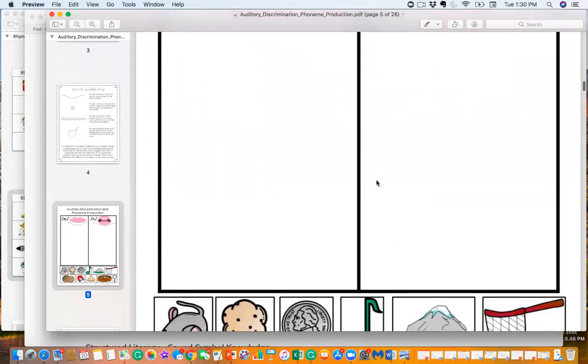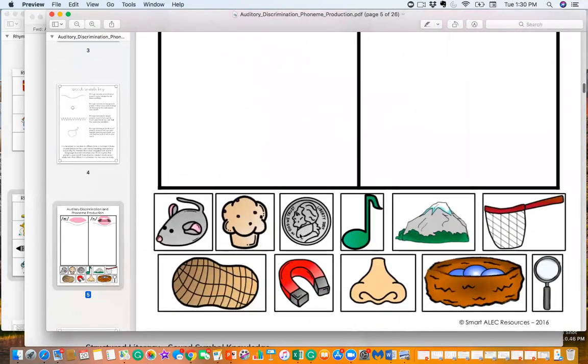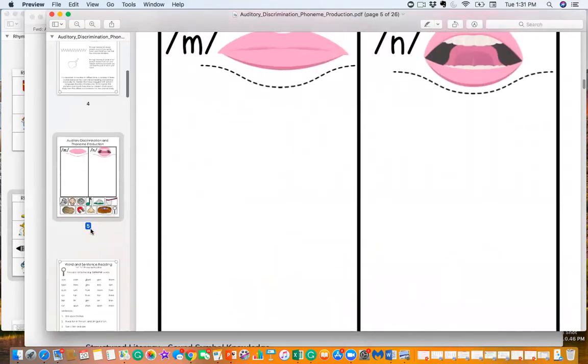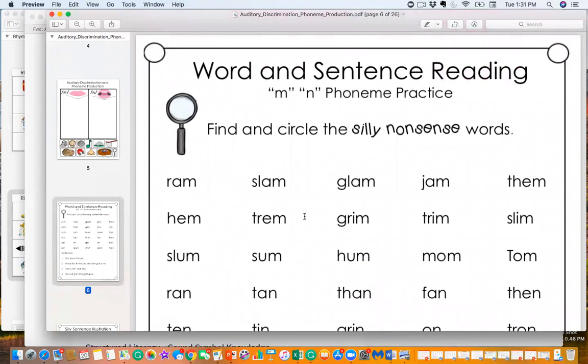Then down here below this chart are all these images that your students can cut out and sort. Is this an M or an N sound? And they're going to sort it on the mat. Then we go from that level up to the word level. Your student gets to go through and circle any silly nonsense words. They're going to practice reading this if they're at that stage and they're ready for it. Again, practicing that M and N sound.